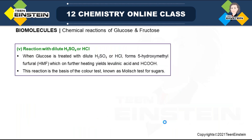The fifth reaction: reaction with dilute H₂SO₄ or HCl. When glucose is treated with dilute H₂SO₄ or HCl, a molecule known as 5-hydroxymethylfurfural (HMF) is formed. Furfural is a furan ring with a CHO group.